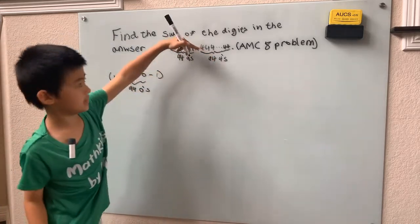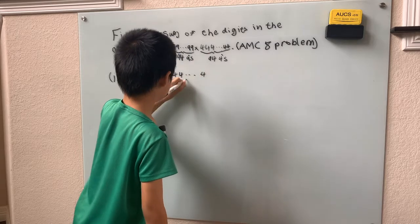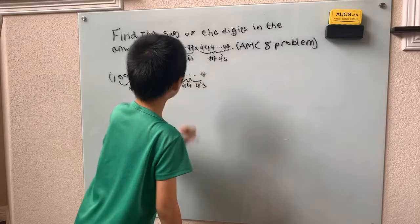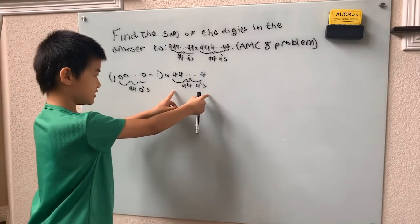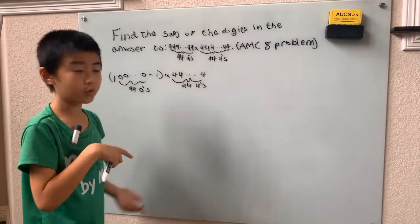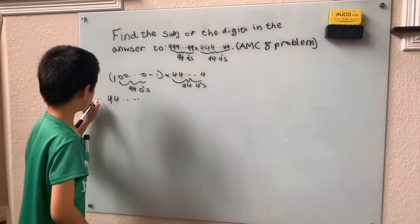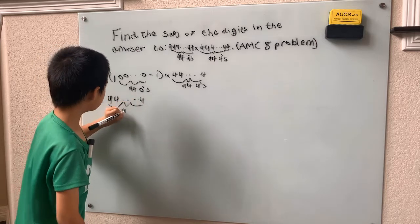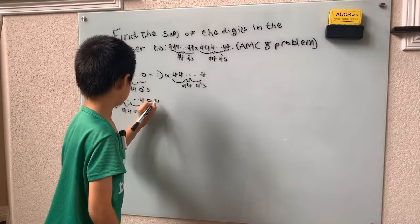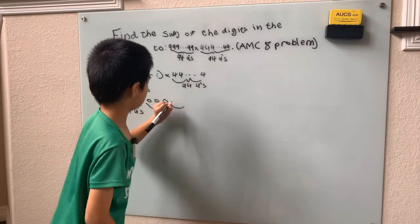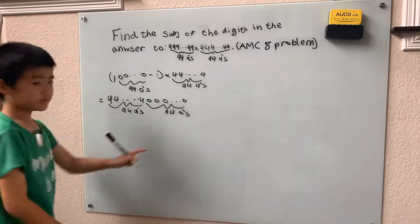We also have to multiply in the 94 fours. Using the distributive property, we take 10^94 times the 94 fours, which gives us 94 fours followed by 94 zeros. That's our 188-digit number: a whole bunch of 4s followed by a whole bunch of 0s.